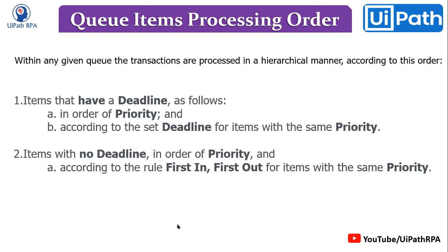There are two rules. First, items that have a deadline are processed in order of priority, and according to the set deadline for items with the same priority. Second, items with no deadline are processed in order of priority, and according to the first-in-first-out rule for items with the same priority. I'm going to show you all these things with practical examples.